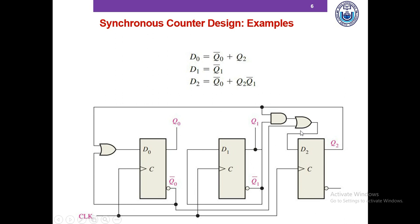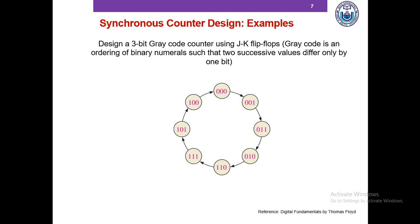This circuit is a synchronous counter that counts 1, 2, 5, 7, again and again. Here is another counter design example. We need to design a 3-bit gray counter using JK flip-flops, which counts gray code. Gray code is an ordering of binary digits such that two successive values differ only by one bit. For example, the sequence goes 0, 1, 3, 2 — going from 1 to 3 instead of 1 to 2, because 1 to 2 requires a 2-bit change whereas 1 to 3 requires only a 1-bit change.